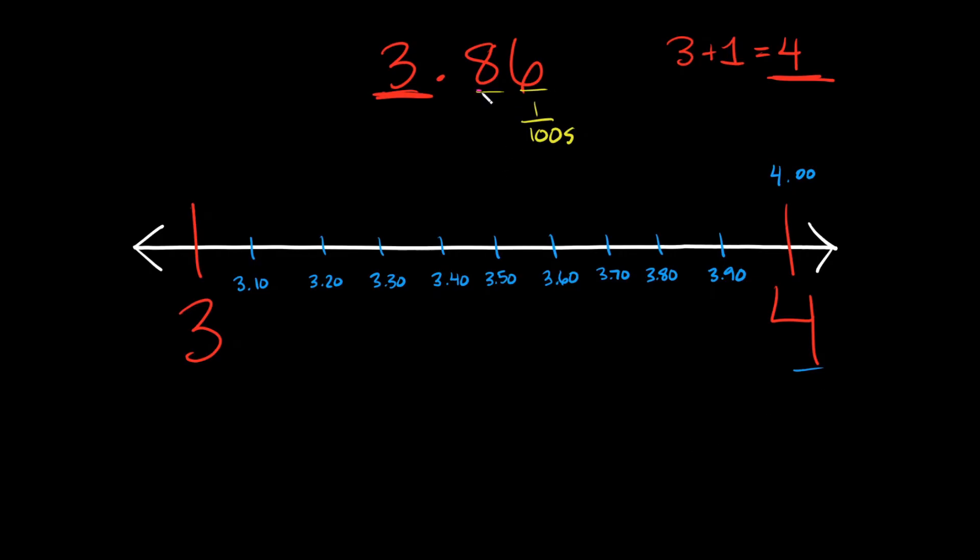So here we have the number 86. So if we had drawn the 100 little tick marks, you'd start at three, and then you would move over 86 little marks. The easier way to do this is saying, okay, so I have 86 here. So I know I'm going to be somewhere between 80 and 90.